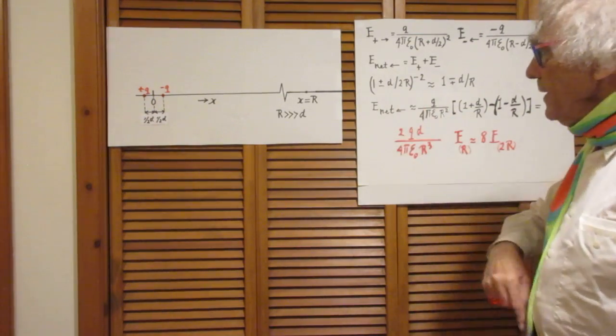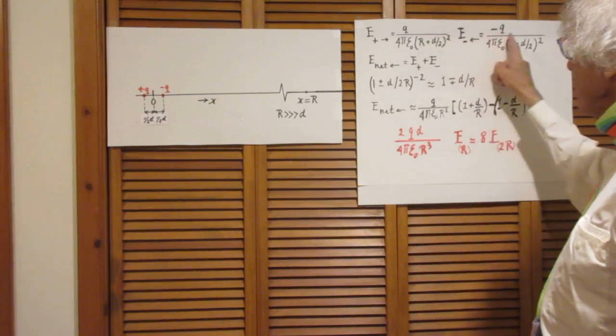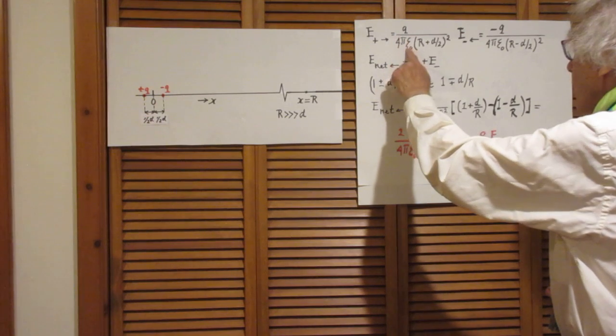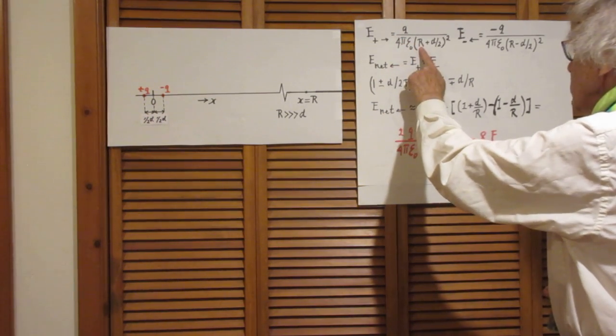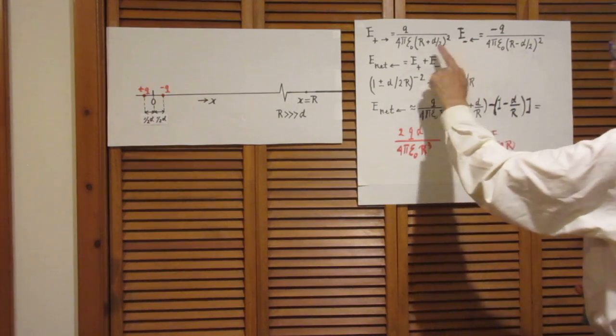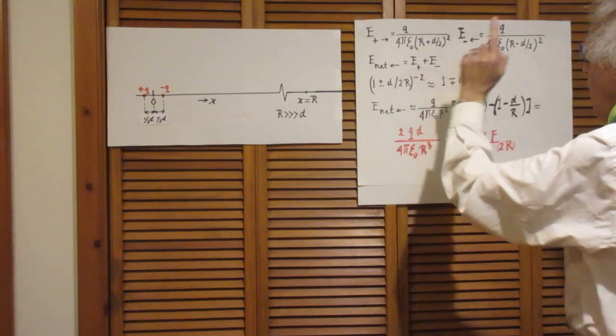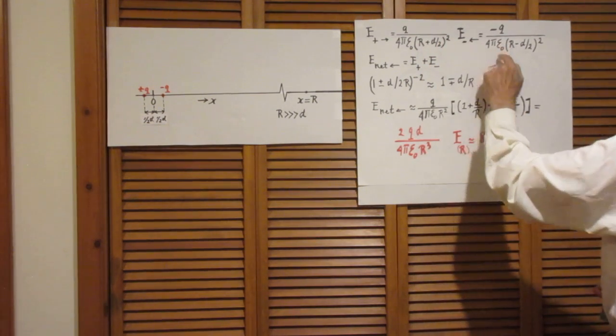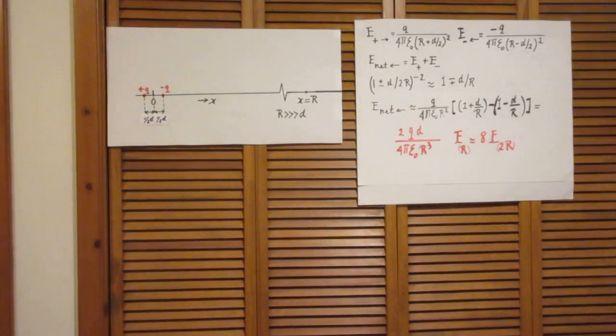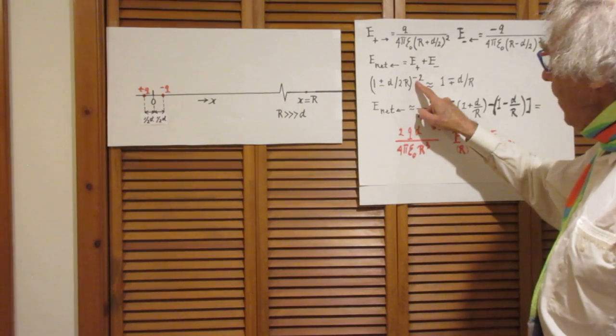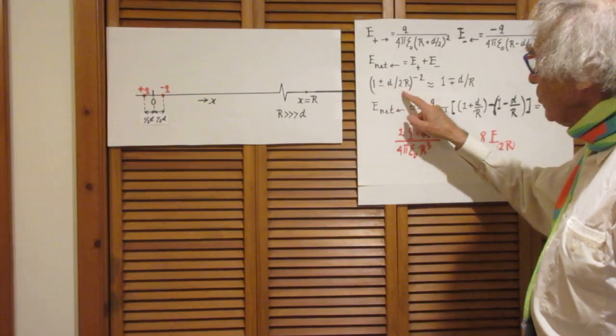So now the net electric field at point R is the sum of these two. I bring this R outside. So we get here 4 pi epsilon 0 R squared. This then becomes R plus D over 2R. And I do the same here. So I get here R squared. This one becomes 1, not R, but 1 plus 2 over, 1 plus D over 2R. So we get an R squared here. We get 1 minus D over 2R. With a square of course. Now I single out the term 1 plus D over 2R to the power minus 2. And 1 minus D over 2R to the power minus 2.